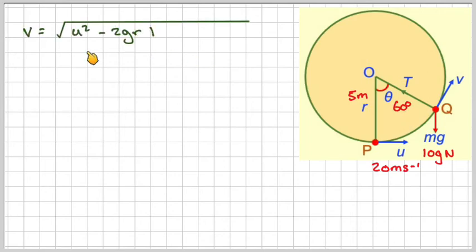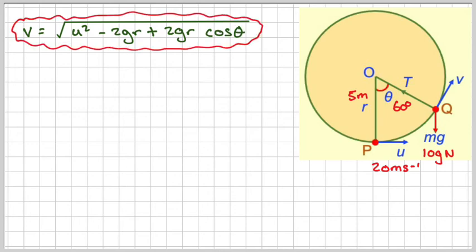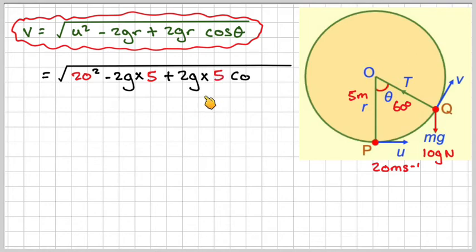Using our first formula that we derived, which is V is equal to square root U squared minus 2G R plus 2G R cos theta. Substituting in, 20 squared minus 2 times G times 5 plus 2G times 5 cos 60. That gives me 18.734. And round off to three significant figures, that gives me 18.7 meters per second.